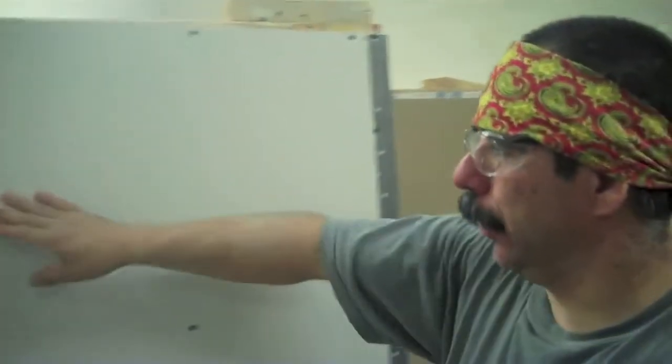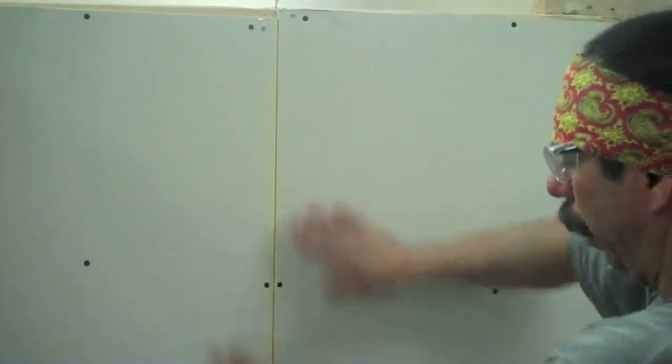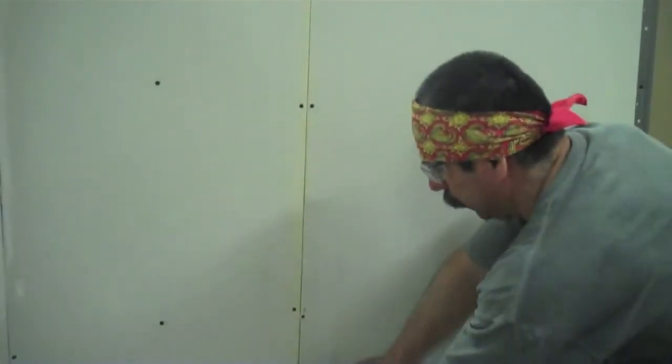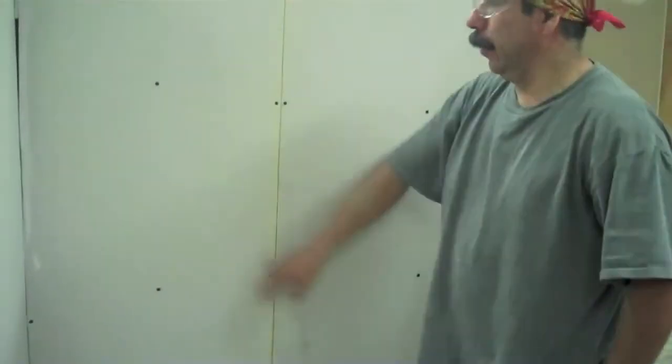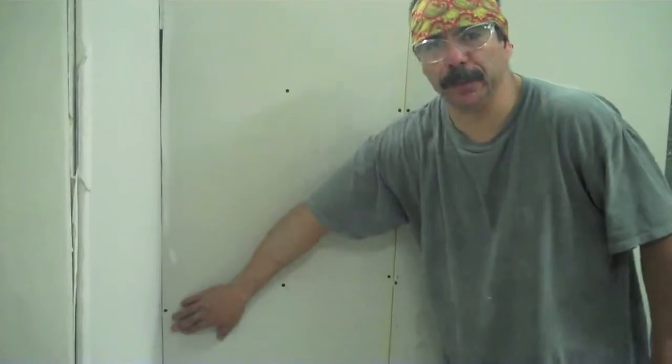Now we're going to go to the seam and also check if there's any movement of the drywall. You do this on a few areas. Looks nice and firm. Then we do the same on the inside corner, make sure there's no movement of the drywall.